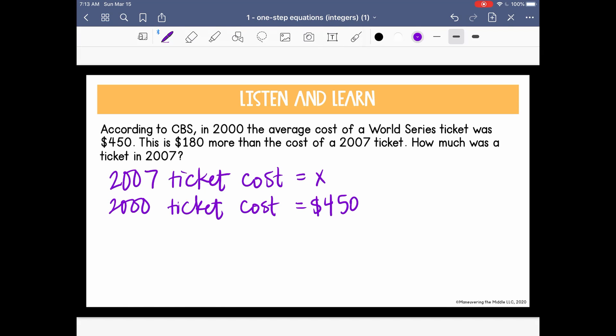It also tells me that there was a ticket in 2000, and that cost was $450. Now the tricky statement is right here. It says this is $180 more than the cost of a 2007 ticket. So let's think about what that means. Is the ticket in 2000 more expensive, or is the 2007 ticket more expensive? When I read that, I can see that the 2000 ticket is $180 more than the cost of the 2007 ticket. So I can see that the 2000 ticket is actually the more expensive thing, and that is what we are going to set our equation equal to.